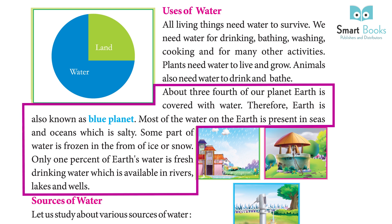About three-fourths of our planet Earth is covered with water, therefore Earth is also known as the blue planet. Most of the water on Earth is present in the seas and oceans, which is salty. Some part of water is frozen in the form of ice or snow. Only 1% of Earth's water is fresh drinking water, available in rivers, lakes, and wells.